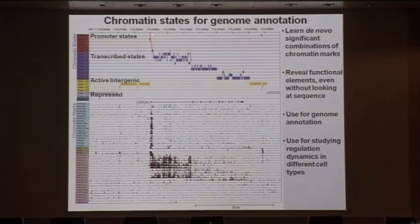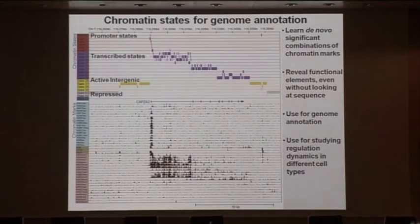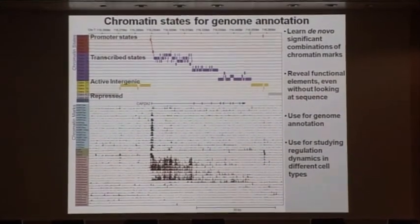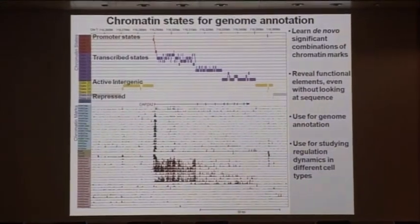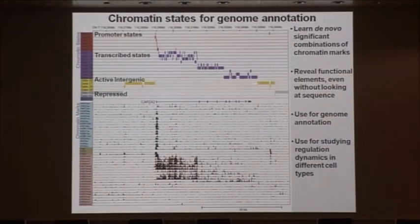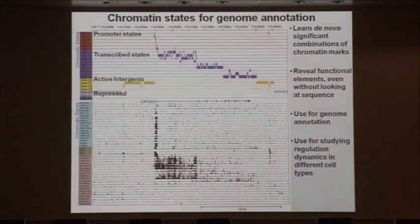The different promoter regions are surrounding the transcription start site here. The different transcribed regions are, in fact, found along the body of the transcript. And then active intergenic regions are found flanking these active transcripts. And then further away from the gene, you have these repressed regions.